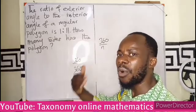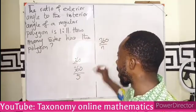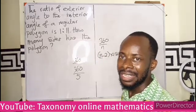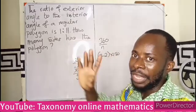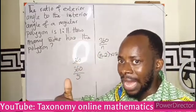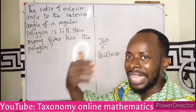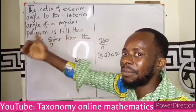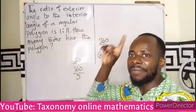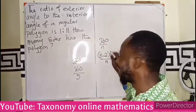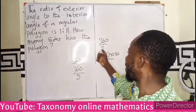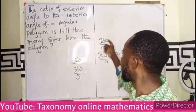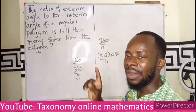Now if I'm looking for the sum of the interior angles, that is n minus 2 times 180. That gives the sum of the interior angles — adding all of them. Since the polygon is regular, all angles are equal, so to find one interior angle, I divide by the number of sides. So the interior angle of a regular polygon is (n−2)×180 divided by n.